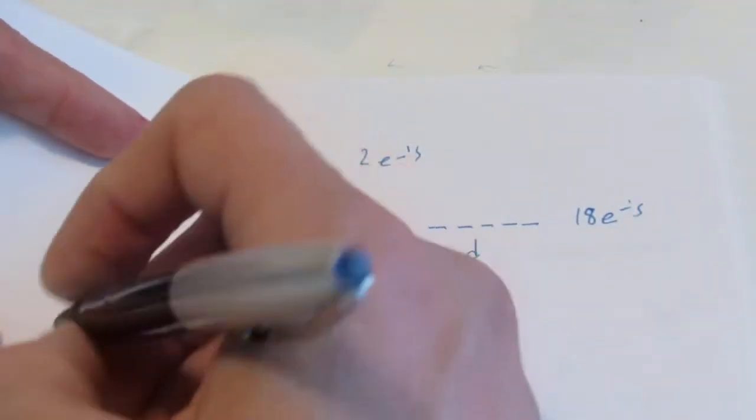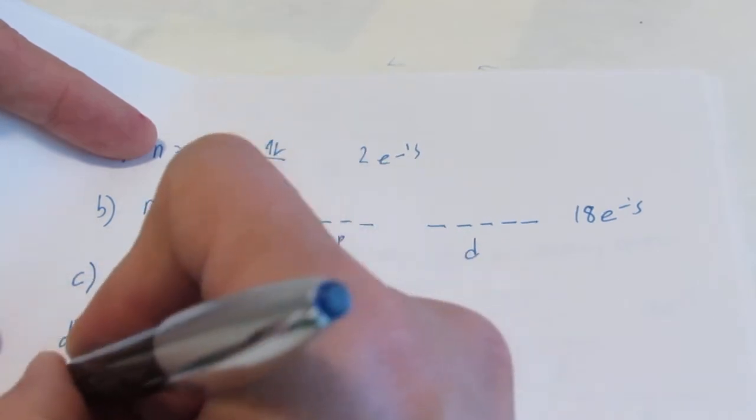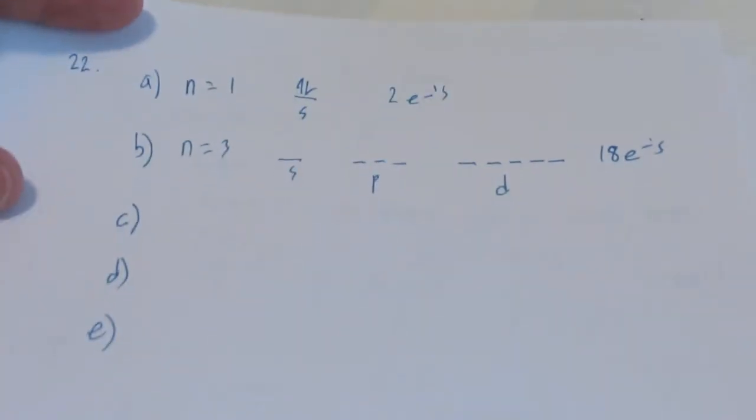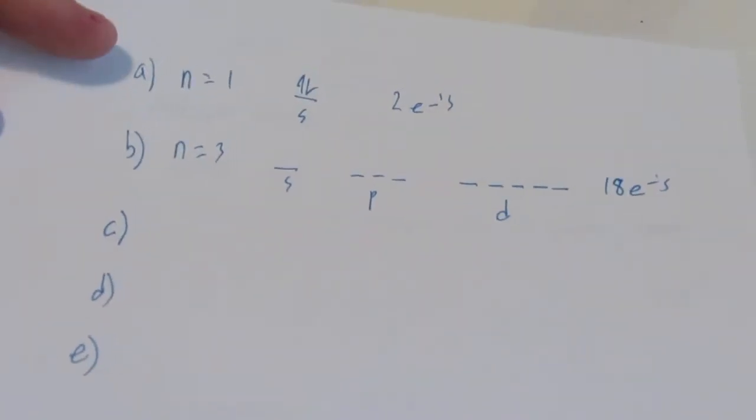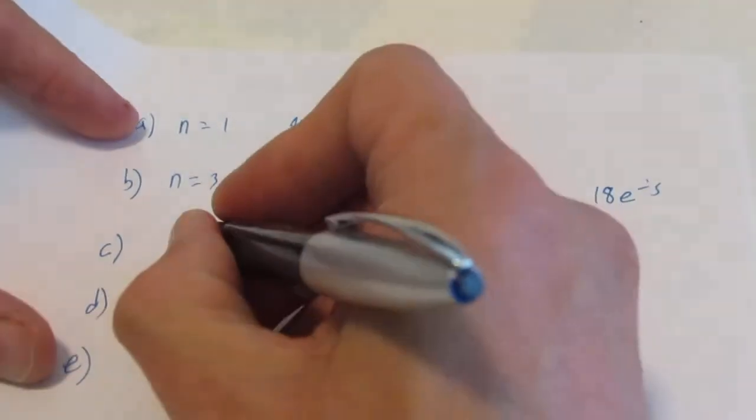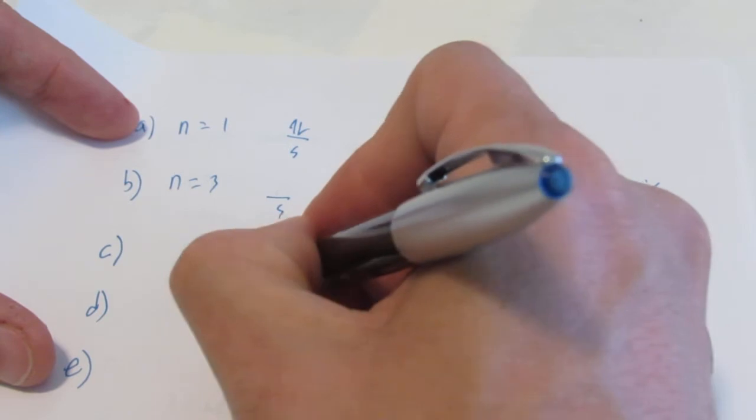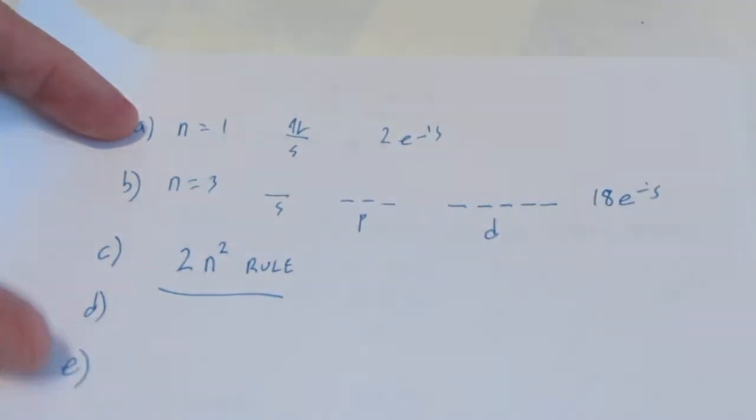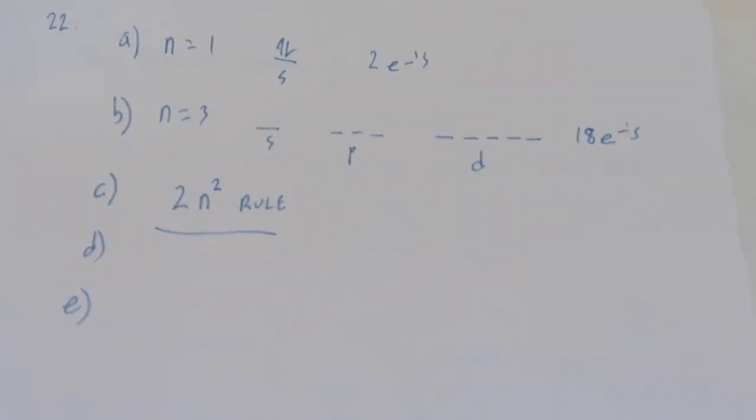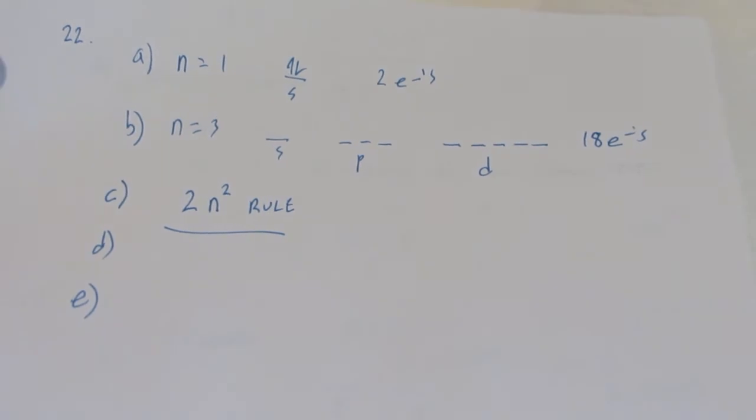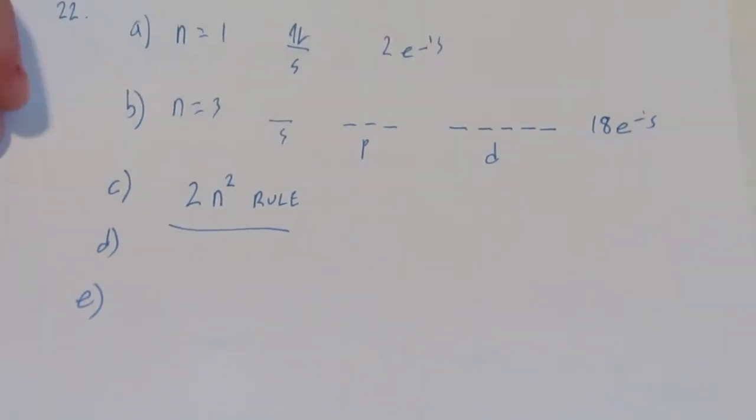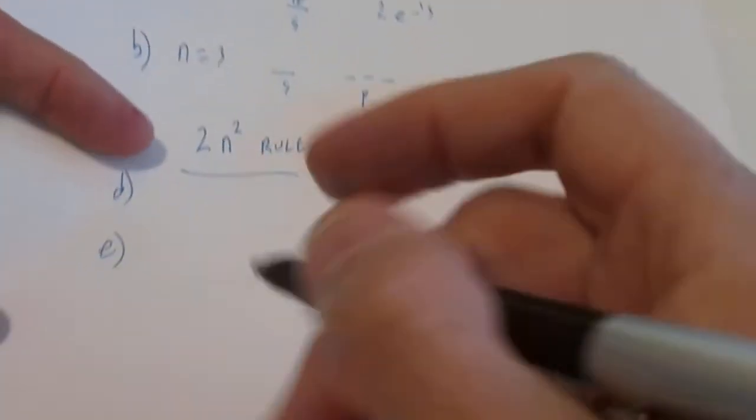And then C, D, and E, you are on your own. I will give you a hint. Think about what the two N squared rule will tell you. So you might want to read about that, and that might give you some help on letters C, D, and E. Okay, and that's assignment thirteen. That's it.